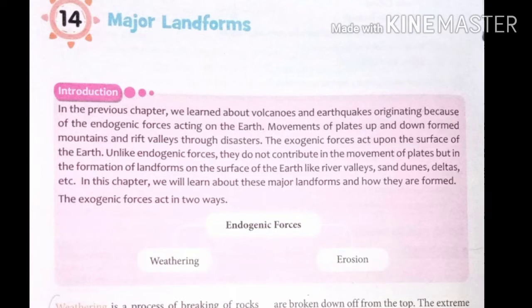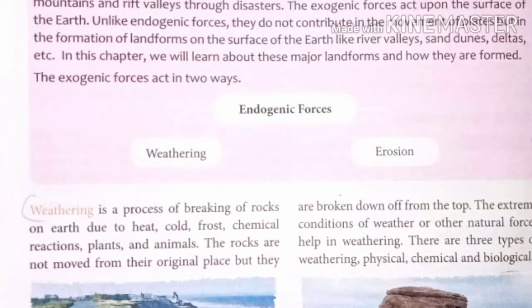In this chapter we'll learn about the major landforms and how they are formed. The exogenic forces act in two ways: the first one is weathering and the next one is erosion. Weathering is a process of breaking of rocks — the breakdown of big rocks into smaller parts because of some reasons.